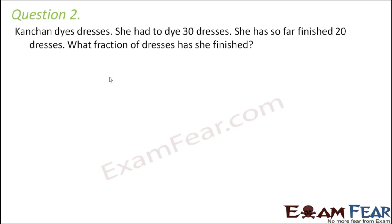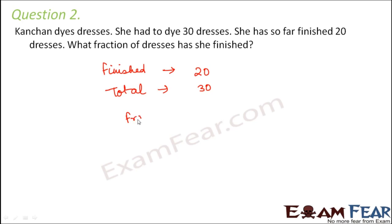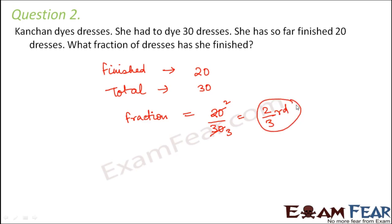Question two: Kanchan dyes dresses. She had to dye 30 dresses and has finished 20. What fraction has she finished? She finished 20 out of 30 dresses, so that is 20 by 30. Dividing both by 10 gives two by three. So two-thirds of the dresses have already been finished.